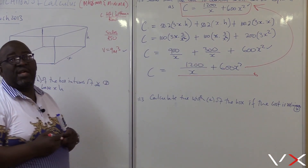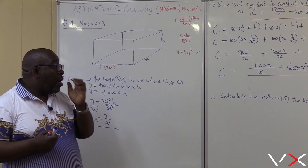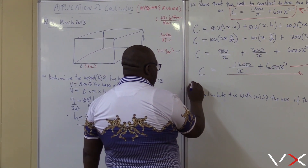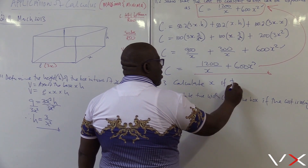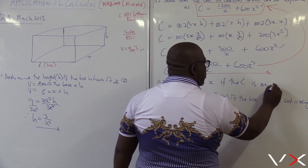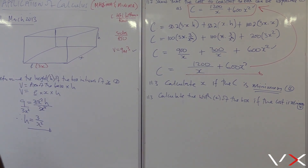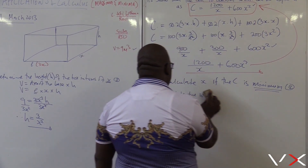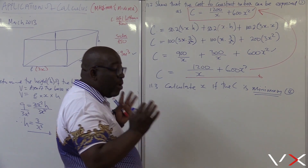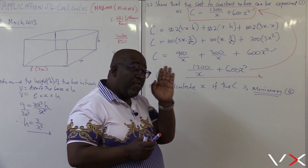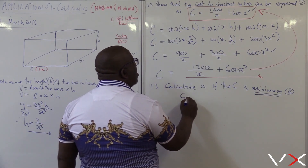So it is true that the cost can be expressed in that way. Remember, the idea here was to understand the total surface areas. Now I want us to look at the last part, 11.3: calculate x if the cost is a minimum. That is that keyword again — minimum or maximum. Remember what we said: when we see minimum or maximum, we let our derivative be equal to zero. Now let's do this thing. This is my cost.